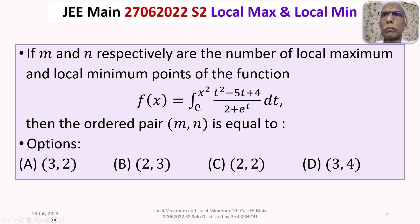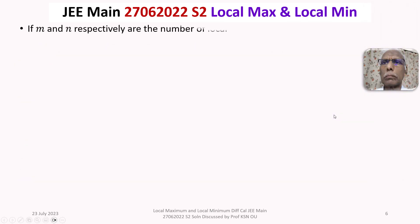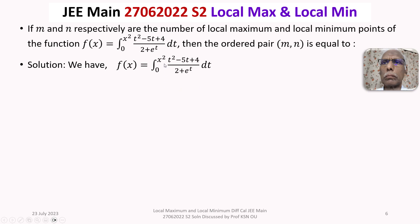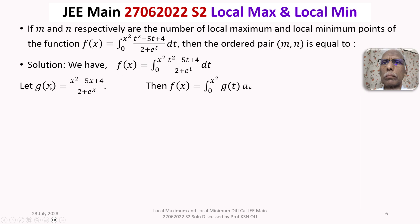We are given a function f(x) defined as that integral, where M and N are respectively the number of local maximum and local minimum points. We need to find the ordered pair (M, N). Let us define g(x) = (x² − 5x + 4)/(2 + eˣ), which is the integrand, so that f(x) = integral from 0 to x² of g(t) dt.